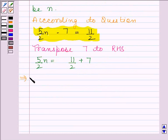This implies 5 by 2 N is equal to 11 plus 14 divided by 2.